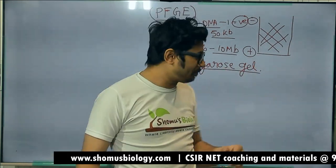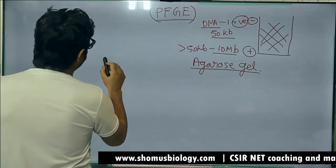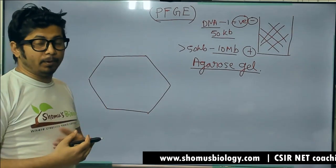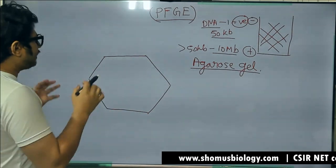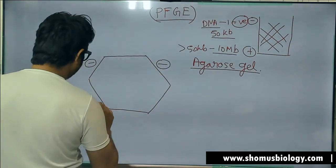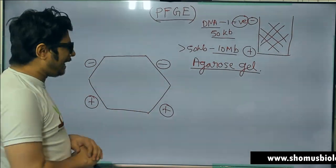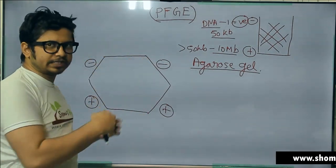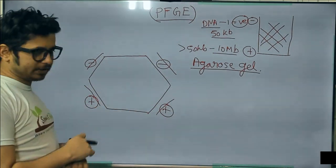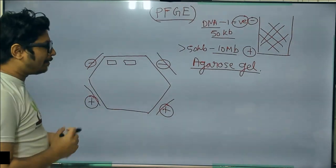Pulse-field gel electrophoresis is generally conducted in a hexagonal box. In this hexagonal box the gel is placed, and we have negative charge electrodes on two sides and positive charge electrodes on the other two sides — so four electrodes total, two negative and two positive. Actually, multiple electrodes can be placed with all negatives on one side and all positives on the other side. Then we load the gel.